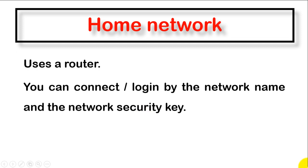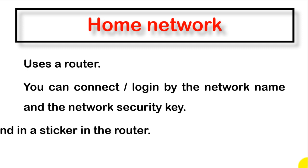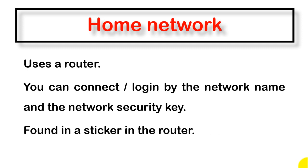Whenever you have a mobile phone and there is a router at your home or school, to access the internet you activate Wi-Fi, search for available Wi-Fi networks, pick a network name, and then enter the correct security key. If you enter the security key correctly, you are connected to the home network using the router.